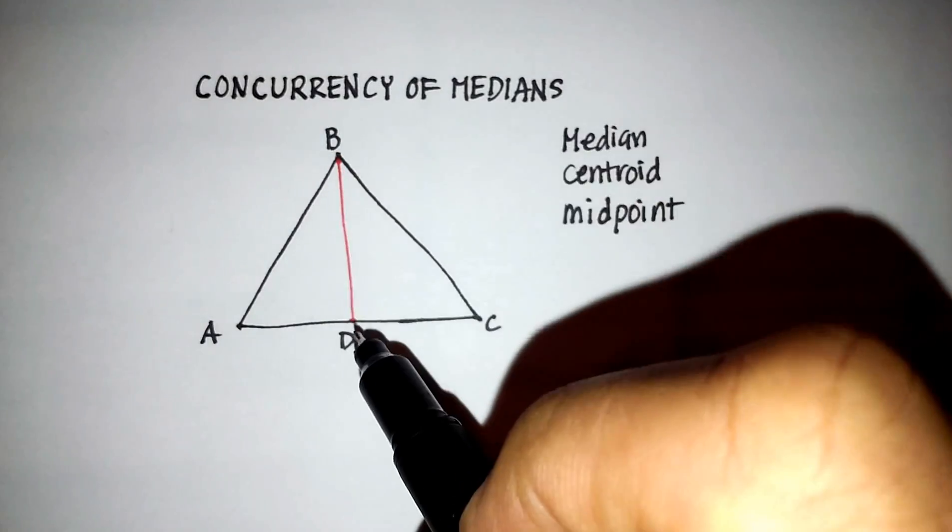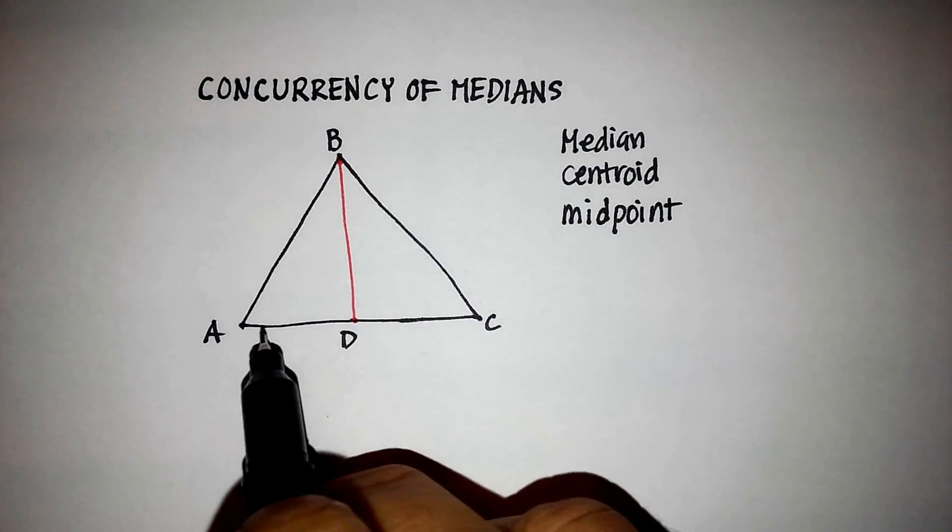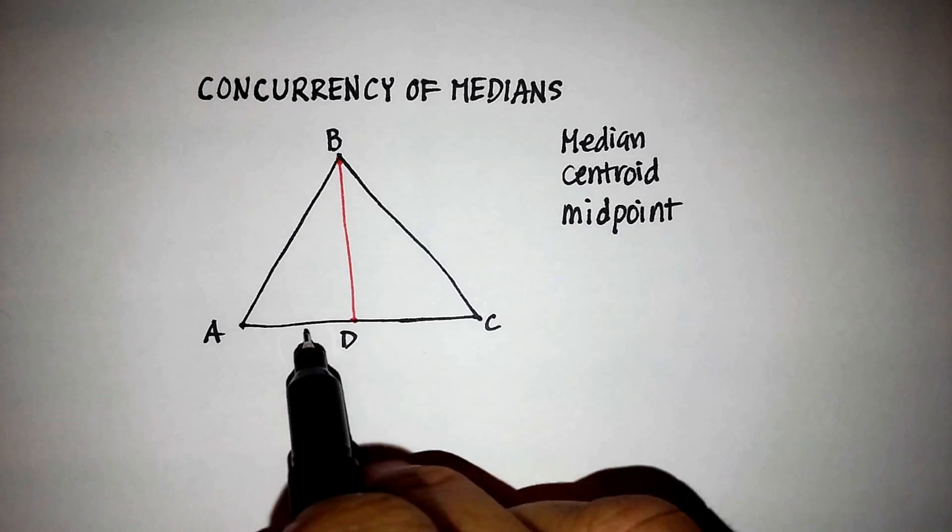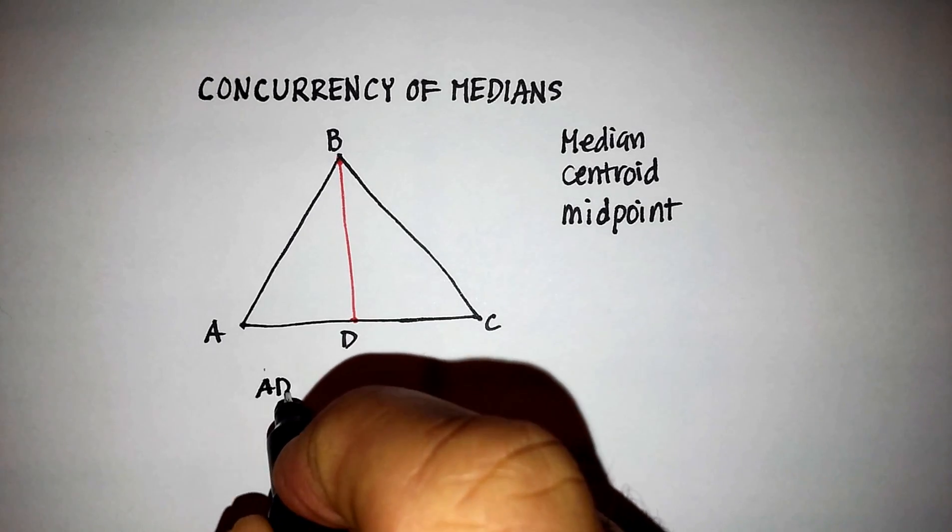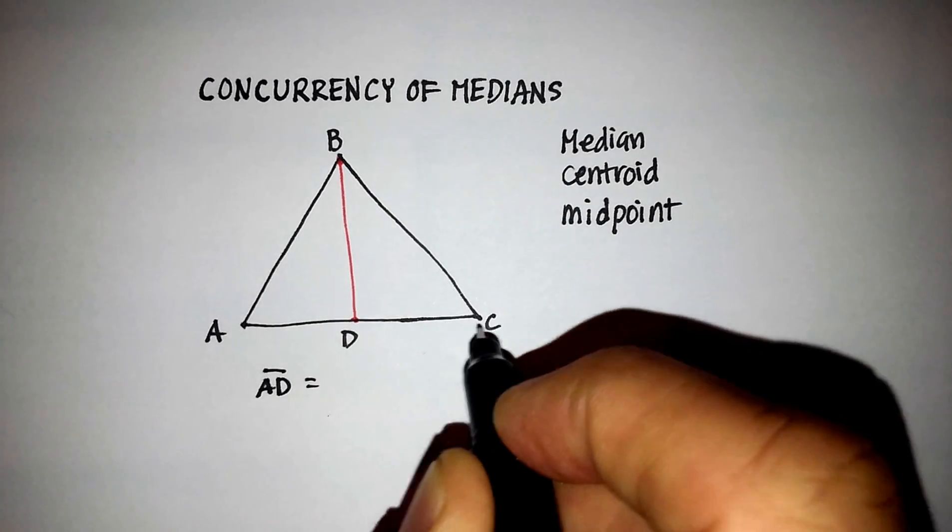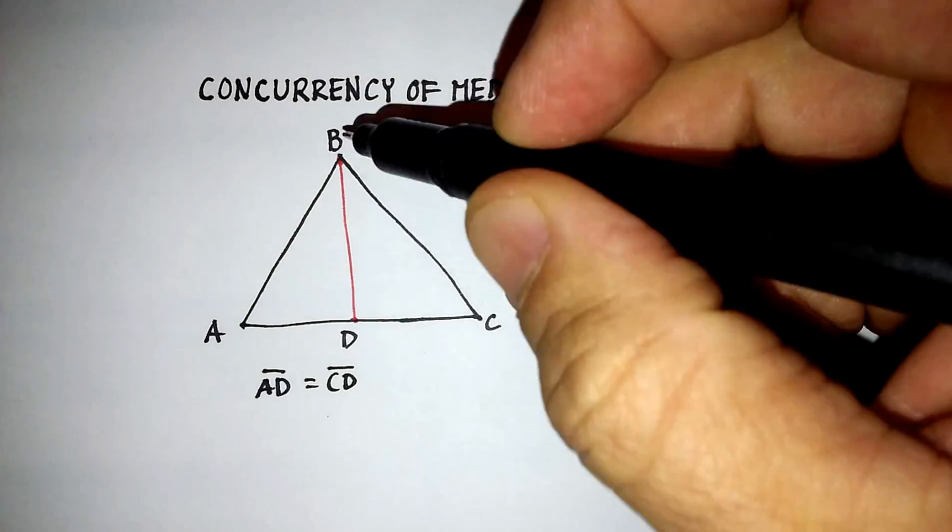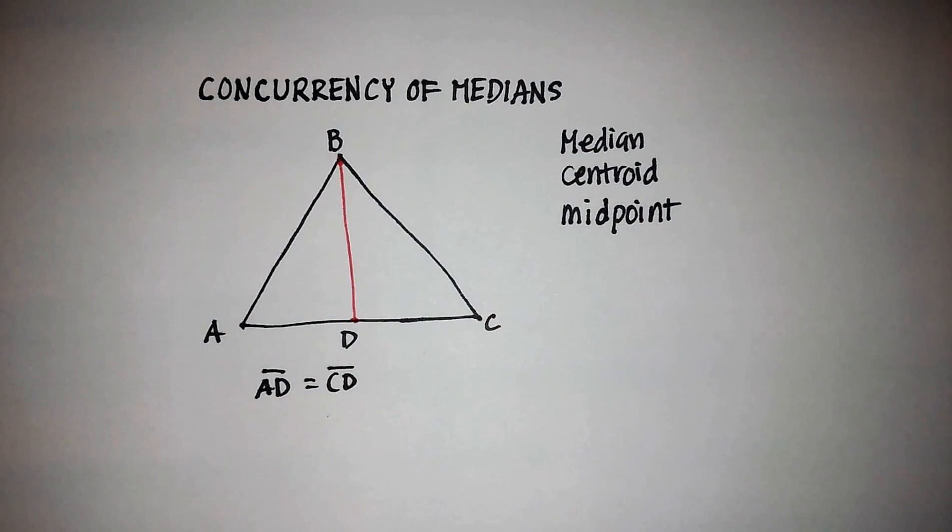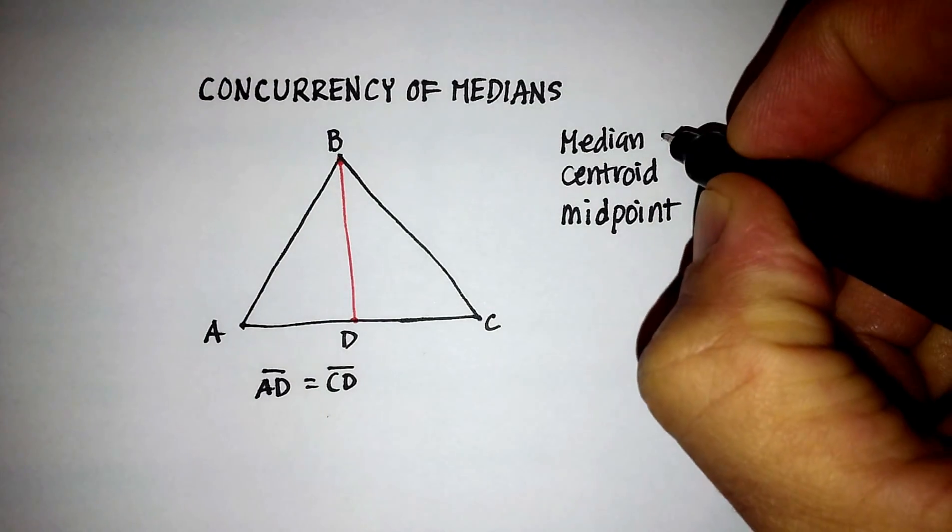And what line segment BD does is it puts this line segment here, it creates two equal halves. So that line segment AD is basically equal to line segment CD. And the median in this particular case is BD.